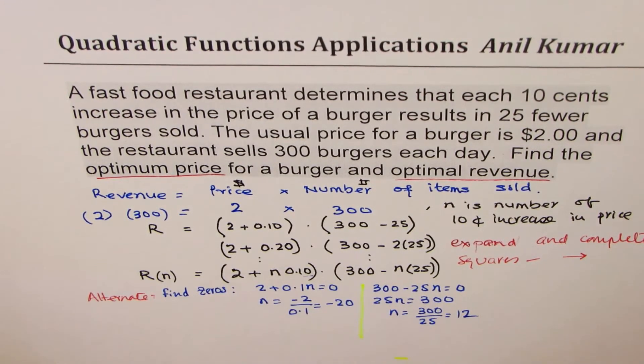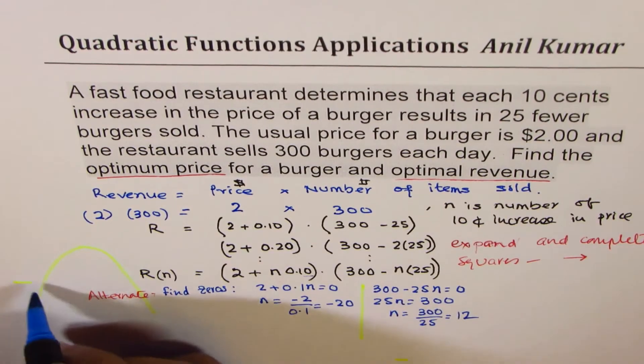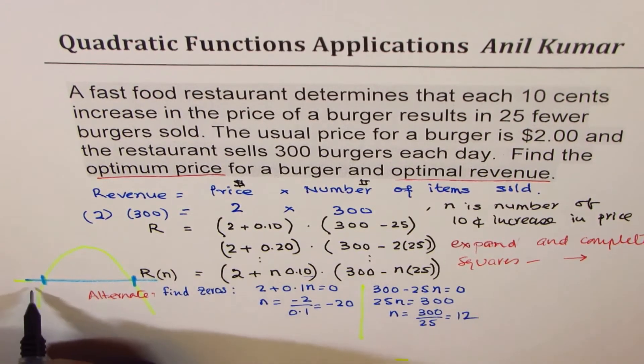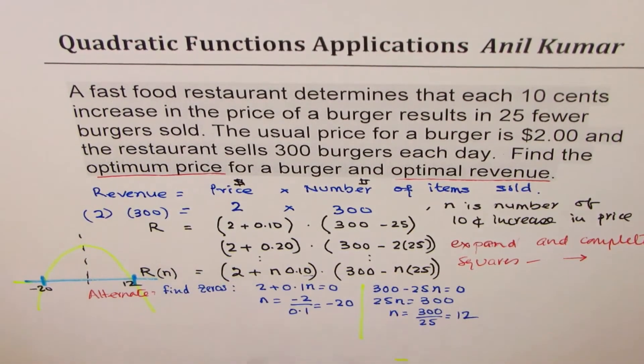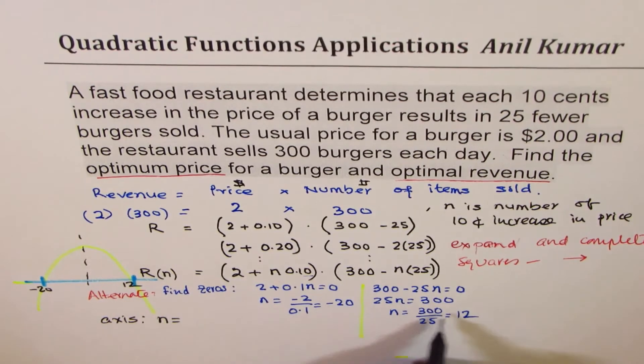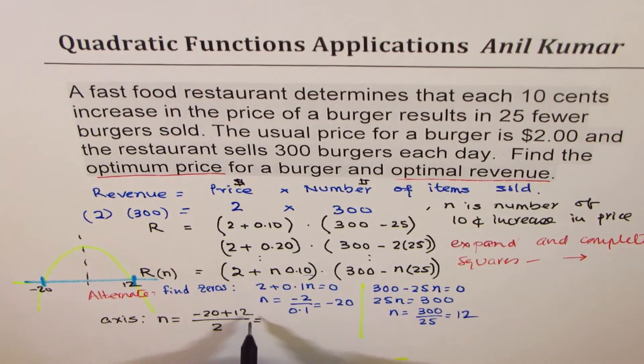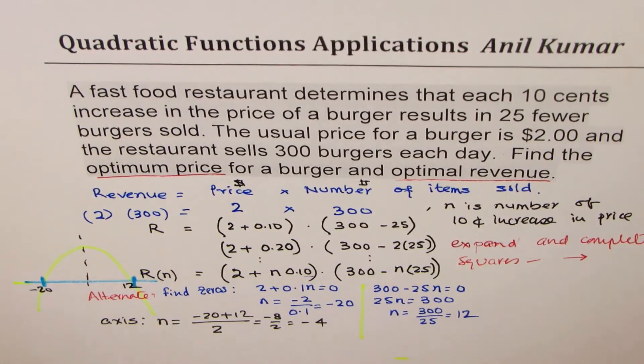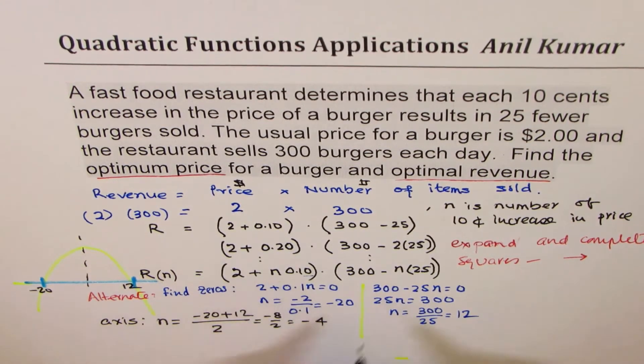Because this function, if you sketch, will be kind of like this. So what we have got here are two zeros, one here and the other one here. So these two zeros are at minus 20 and at plus 12. So the average, which is the axis, add them divided by 2. So it's minus 20 plus 12 divided by 2, which is minus 8 divided by 2, which is minus 4. So the value of n is minus 4.